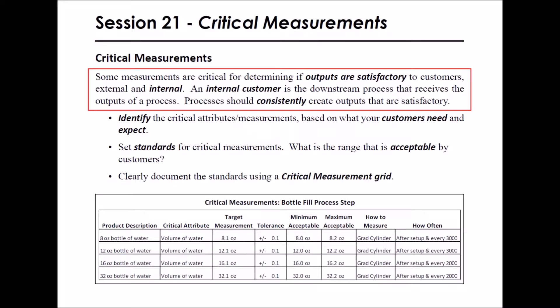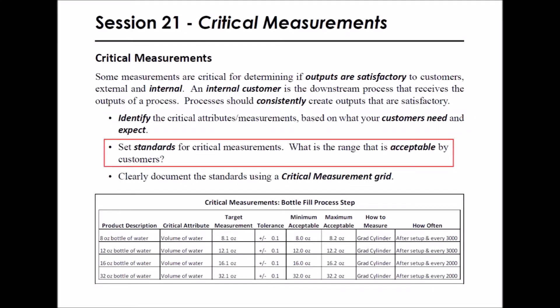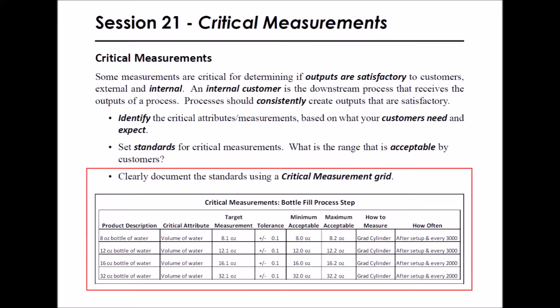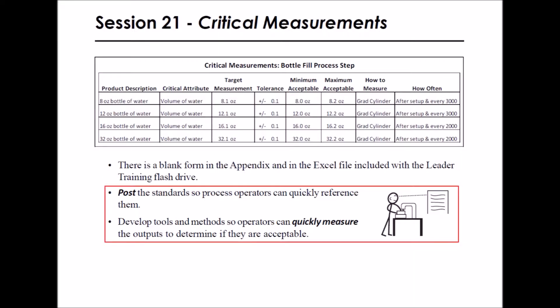Processes should consistently create outputs that are satisfactory. First, identify the critical attributes or measurements based on what customers need and expect. Then set standards for the measurements based on the range that is acceptable by the customers. Clearly document the standards using a critical measurement grid — there is a blank form in the appendix and an Excel copy included with the leader training flash drive. The standards should be posted so operators can quickly reference them.